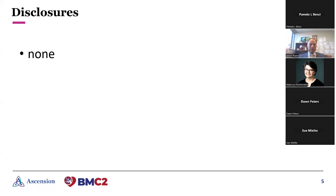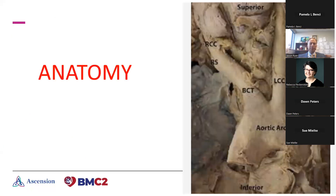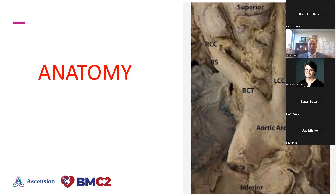I have no disclosures to discuss. Before we get into the different classifications between a type 1, 2, and 3 arch, I wanted to go over a little bit of the anatomy. This is a cadaveric representation of an aortic arch. The brachiocephalic trunk, or the innominate artery — they're the same thing — would be the first branch, followed by the left common carotid artery and the left subclavian artery in that depiction.